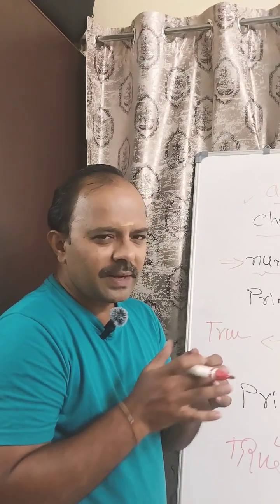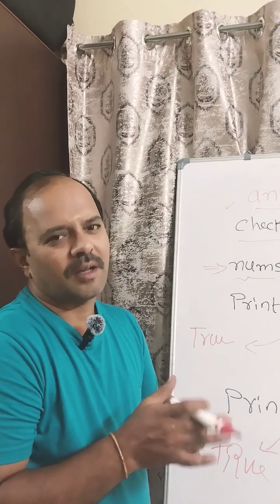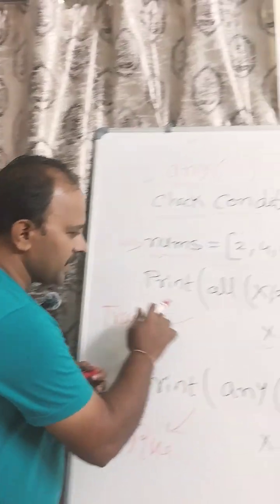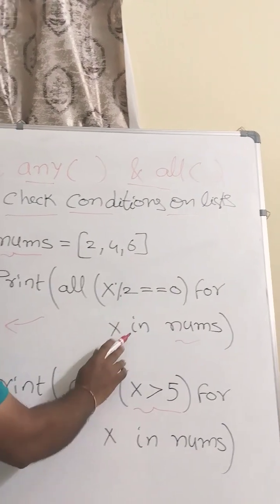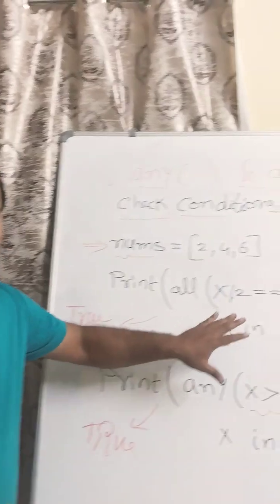Now I am going to apply some condition over the list nums. Let us say print all x modulo 2 equals 0 for x in nums. What does this line of code represent?